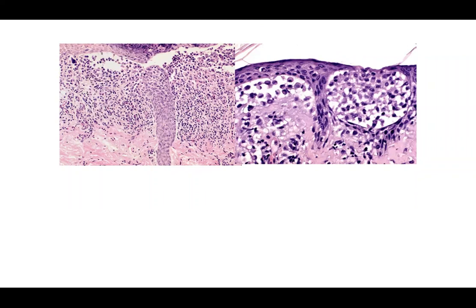But what if this is a young child with a seborrheic dermatitis-like rash unresponsive to ketoconazole, and the clinician wants to rule out Langerhans cell histiocytosis? You cannot rule it out here — you'd be very concerned because those microabscesses are filled with bean-shaped or kidney-shaped cells appearing clonal. You'd want to perform CD1a and S100 stains, which would most likely highlight these cells.